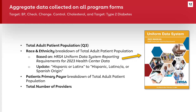Some data we ask will be identical across program forms and can be copied and pasted from one form to another. Target BP, Check Change Control Cholesterol, and Target Type 2 Diabetes will all ask for your total adult patient population (question 3 in each form), a breakdown of that population by race and ethnicity, a breakdown by the patient's primary payer, and your total number of providers. We use a simplified version of categories from Table 3B of the Hersey UDS reporting requirements for 2023 health center data. This year, one adjustment follows UDS: Hispanic or Latin X was changed to Hispanic, Latino, Latina or Spanish Origin.